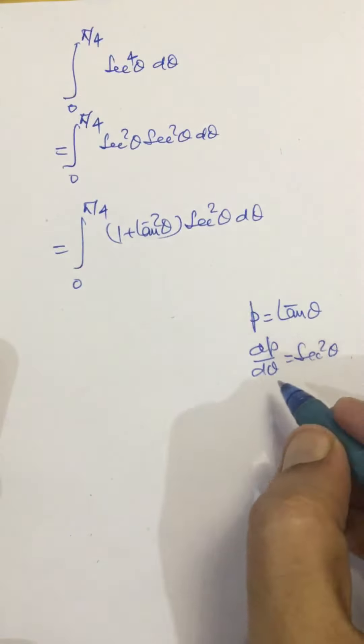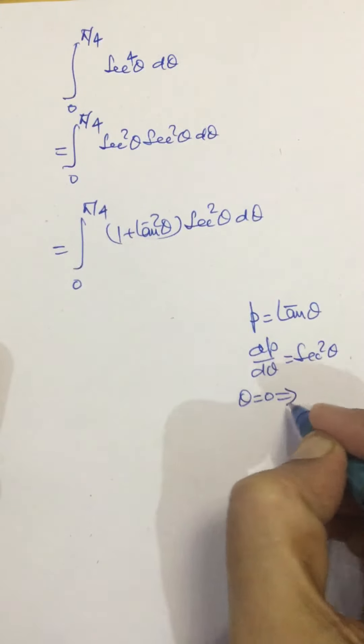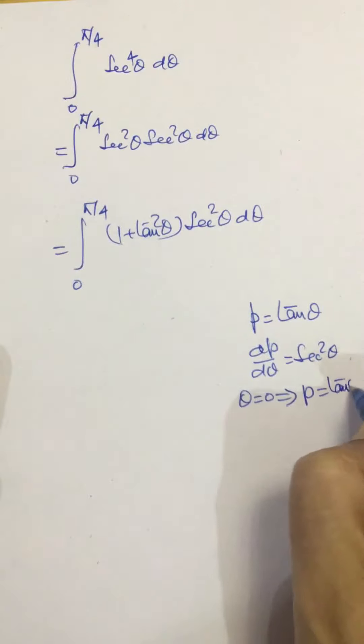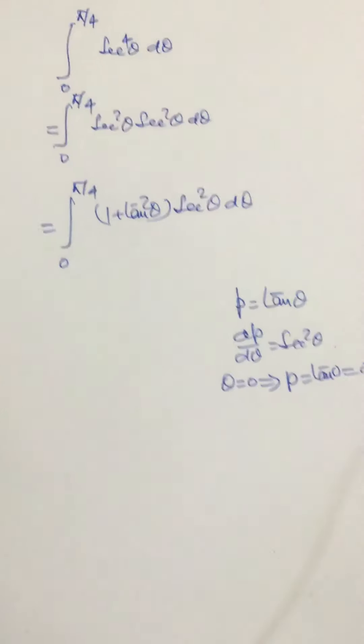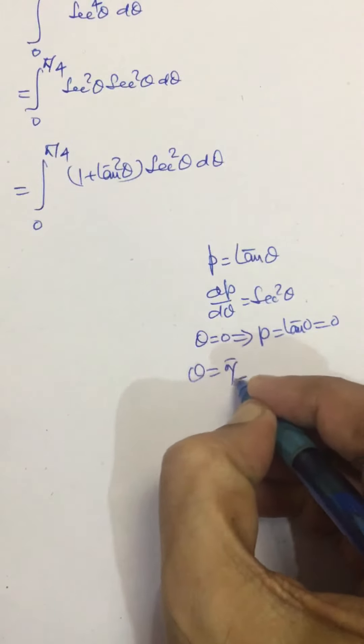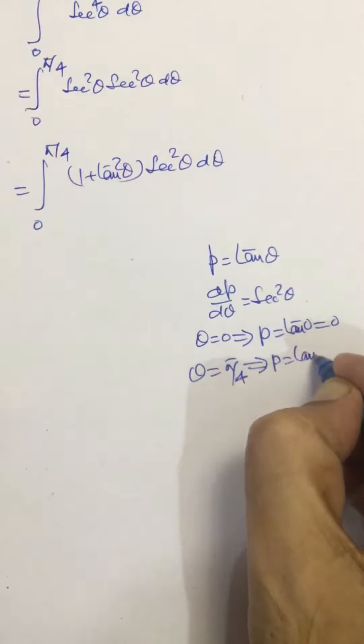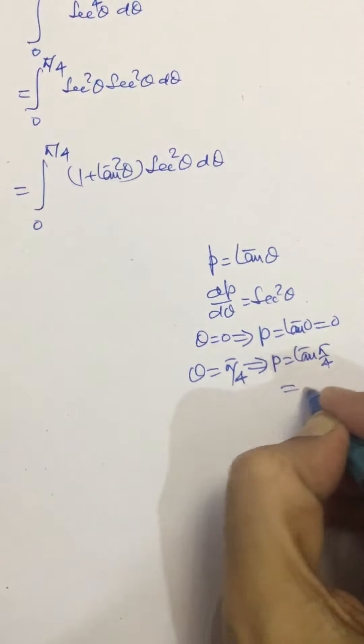If theta is equal to 0, then p is equal to tan 0, that is 0. If theta is equal to pi by 4, then p is equal to tan pi by 4, equal to 1.